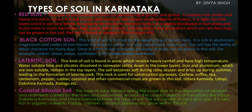Lateritic soil is found in areas that receive heavy rainfall and high temperatures. Water-soluble lime and silicates dissolve and settle in lower layers, while iron and aluminium remain in the top layers. The soil becomes soft during the rainy season and dries up in summer, forming laterite rock, which is used for construction. In this soil, cashew, coffee, tea, cardamom, pepper, rubber, coconut, and other commercial crops can be grown. It is found in Uttara Kannada, Udupi, Dakshina Kannada, and Kodagu.